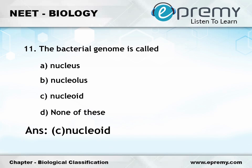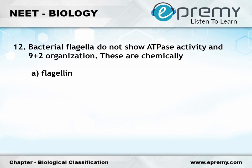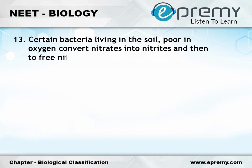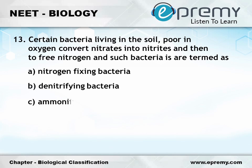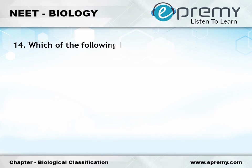Question number 12: Bacterial flagella do not show ATPase activity or a 9+2 organization. These are chemically — Option A: Flagellin; Option B: Pelin; Option C: Tubulin; Option D: Bacterin. The answer is Option A, Flagellin. Question number 13: Certain soil bacteria living in low oxygen conditions convert nitrates into nitrites and then to free nitrogen. Such bacteria are termed — Option A: nitrogen fixing bacteria; Option B: denitrifying bacteria; Option C: ammonifying bacteria; Option D: saprophytic bacteria. The answer is Option B, denitrifying bacteria.